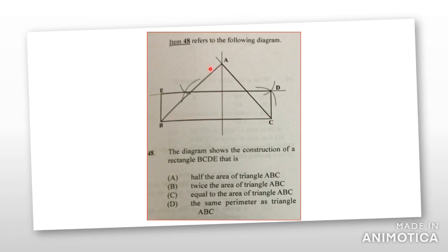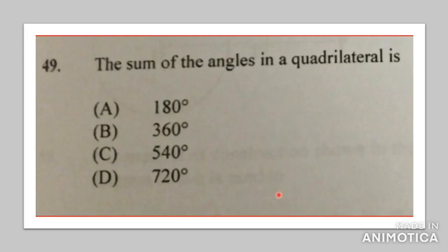And the answer would be because of the base of both the triangle and the rectangle are the same, then the area would actually be the same. So the answer would be C, equal to the area of the triangle A, B, C.